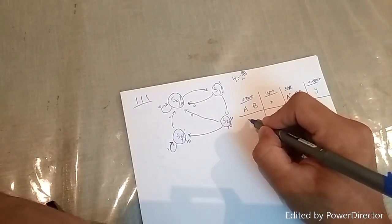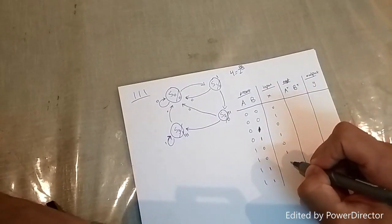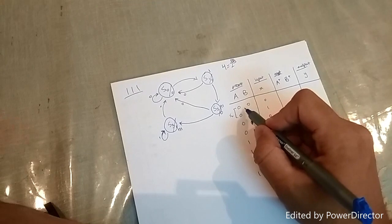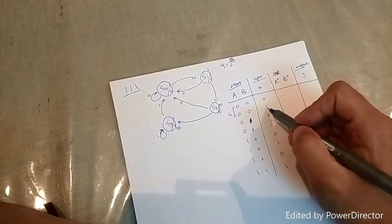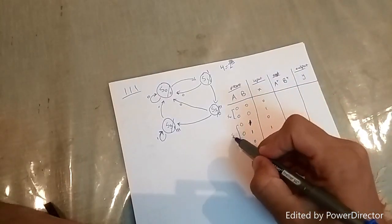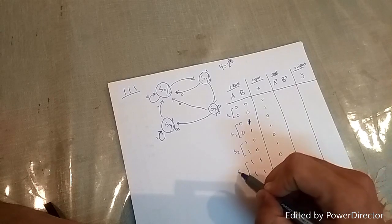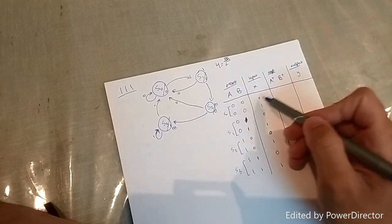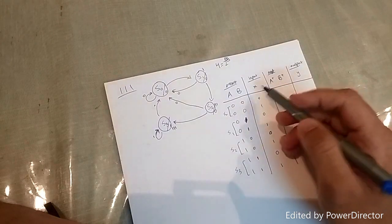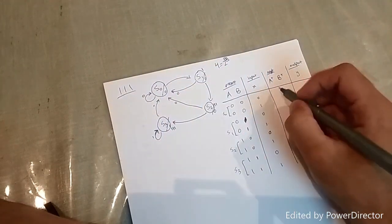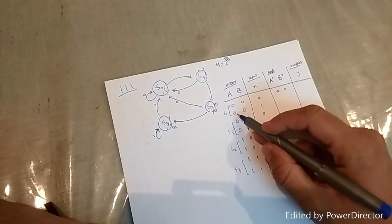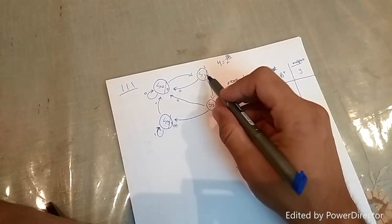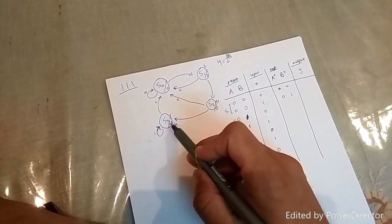We'll have a total of eight different combinations, two combinations for each state. State 0 is 00, state 1 is 01, state 2 is 10, and state 3 is 11. So you have the two different input options — 0 and 1 — for each state. The binary combinations are: 00, 01, 10, and 11 for the present states A and B.